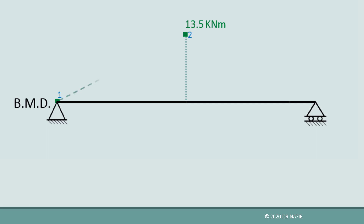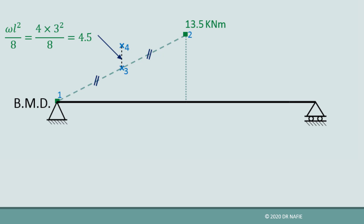First, we will connect point 1 and point 2 using a straight line. This line is a construction line and does not represent the final diagram. Next, we bisect the line at point 3. From point 3, we go up 4.5 kNm in a direction perpendicular to the beam to locate point 4. This value of 4.5 kNm is calculated from the formula WL² / 8, where W is the value of the load and L is the distance between points A and C. From point 4, we go up an identical distance of 4.5 kNm to locate point 5. Next, we draw three lines to act as tangents to the parabola: the first tangent connects point 1 and 5, the second tangent connects point 2 and 5, and the third tangent passes through point 4 and is parallel to line 1-2. Finally, we draw the parabola as a curve tangent to the three lines and passing through points 1, 2, and 4.